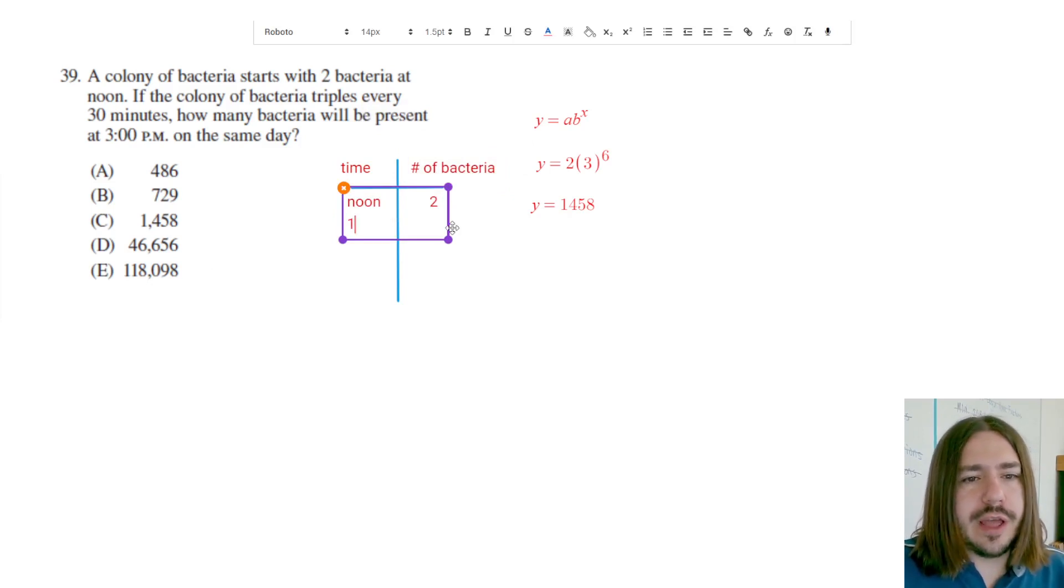And so at 12:30, it tripled, right? So two times three would be six.